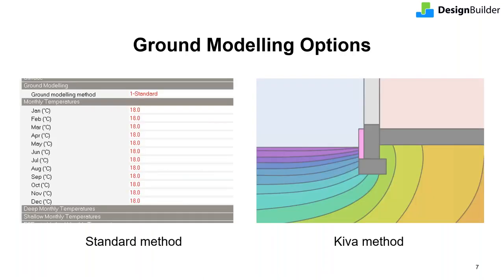There are two main ways to model heat transfers between the ground, the external environment, and the building: the standard method and the Kiva method. The standard method is typically used in all traditional modeling — it uses 12 fixed monthly ground temperatures. The other option, Kiva, uses a multi-dimensional finite heat transfer calculation to determine the ground temperatures and the resultant heat transfers, which is especially needed around foundation and building perimeter. Let's look at each of these in more detail with their modeling setup.